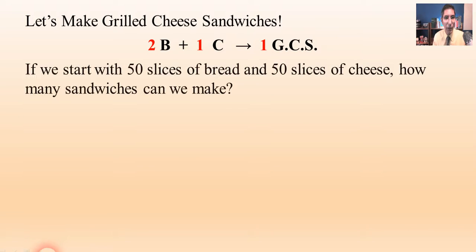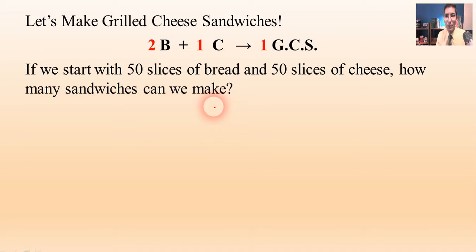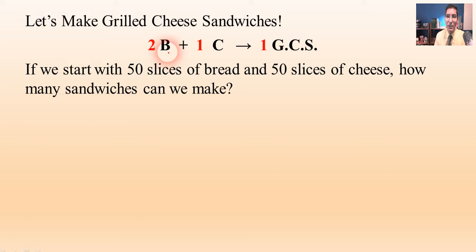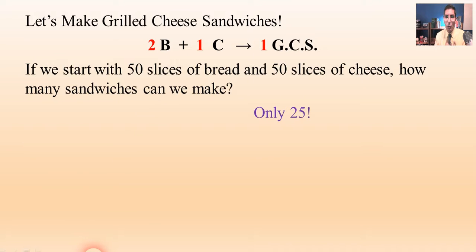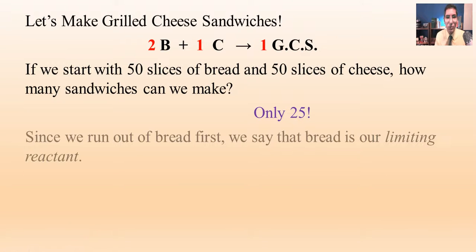Now let's imagine we are going to make a bunch of sandwiches. We look in the cupboard and we have 50 slices of bread and 50 slices of cheese. How many sandwiches can we make? Can we make 50? Well, no. We might have enough cheese to make 50 sandwiches, but it takes two slices of bread to make one sandwich. So with 50 slices of bread you can only make 25 sandwiches. Even though we have both ingredients, one of our ingredients is going to run out first, and that ingredient limits our ability to make the grilled cheese sandwiches.